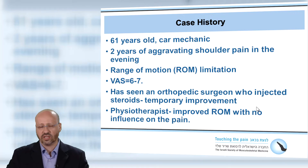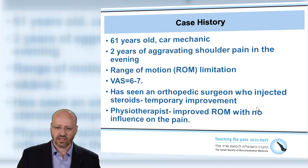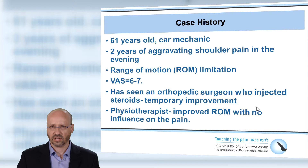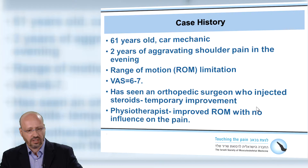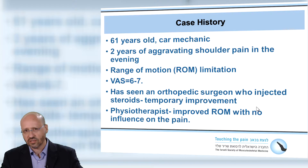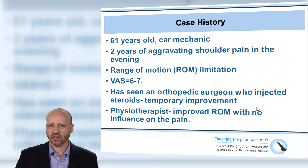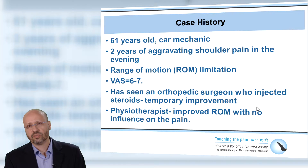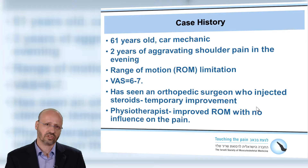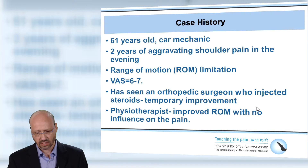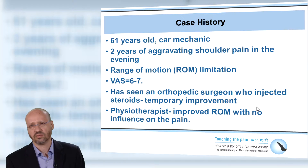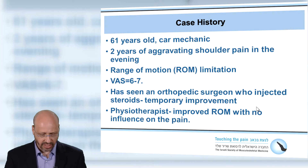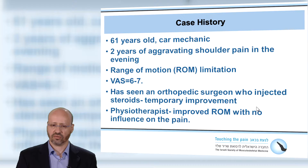So we'll take a case history to begin with. This is a 61-year-old guy, he's a car mechanic. He has been suffering for the last two years from aggravating pain in his shoulder in the evening. He mainly complains about limitation in his range of motion of the shoulder. He cannot move his hand freely and his visual analog scale is somewhere between 6 to 7. He has already seen an orthopedic surgeon who injected his shoulder with steroid. It gave him some temporary relief and improvement, and his physiotherapist treated him a couple of times. This led to a better range of motion but no reduction of his pain.